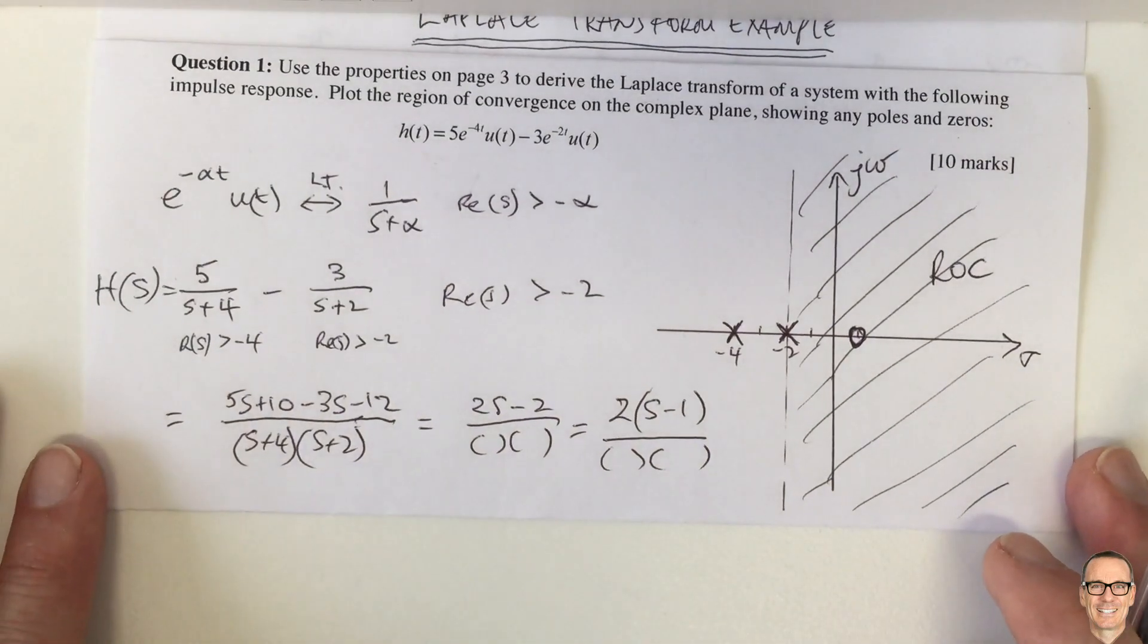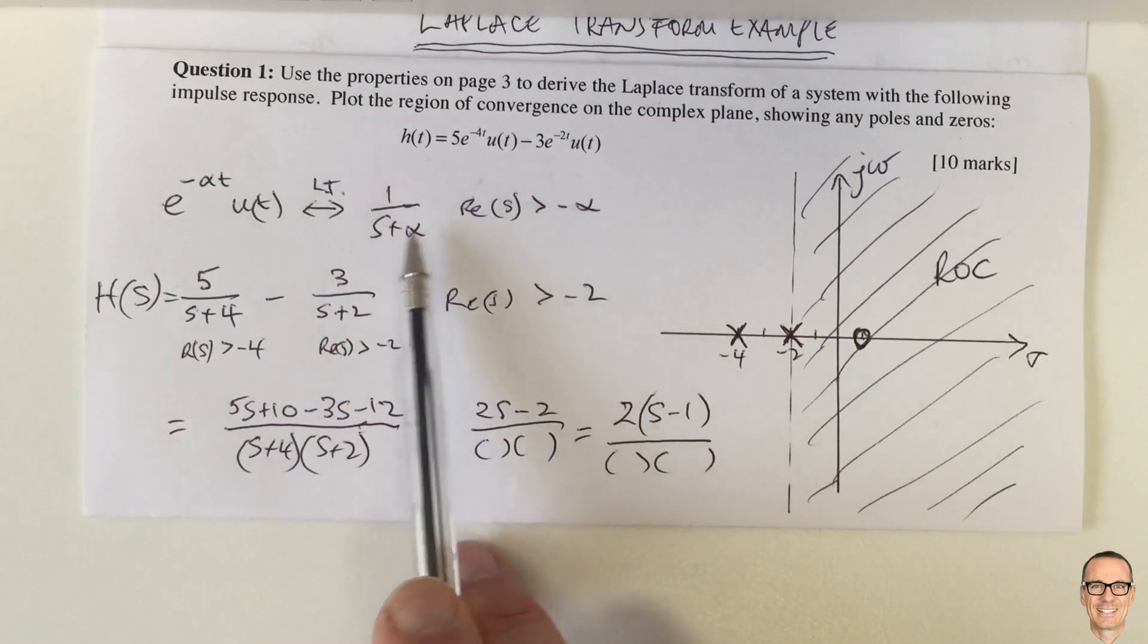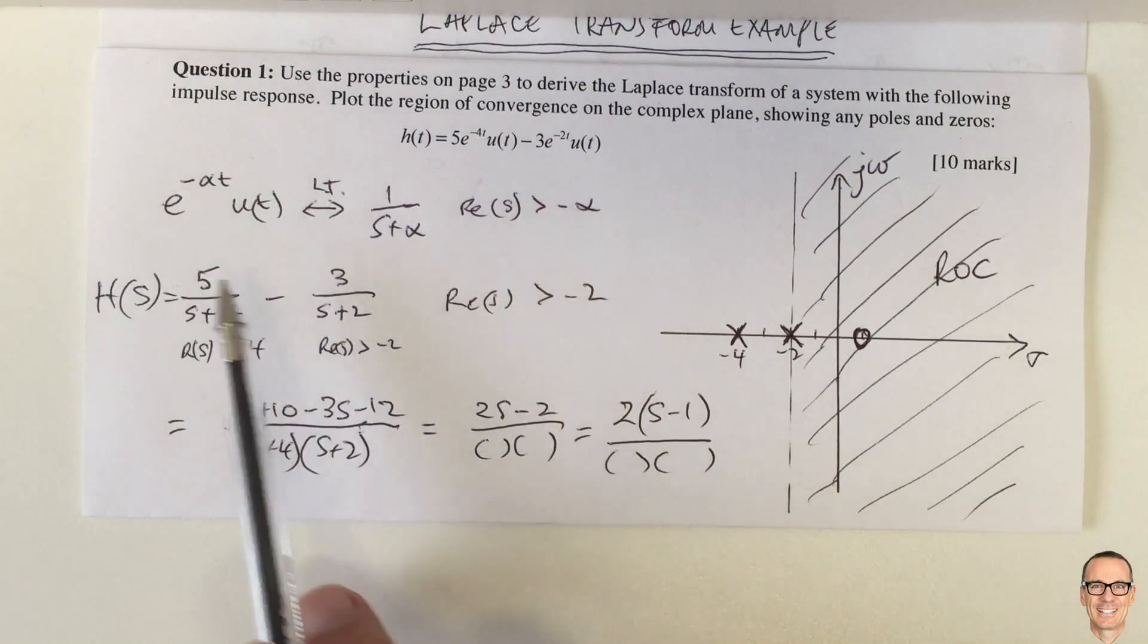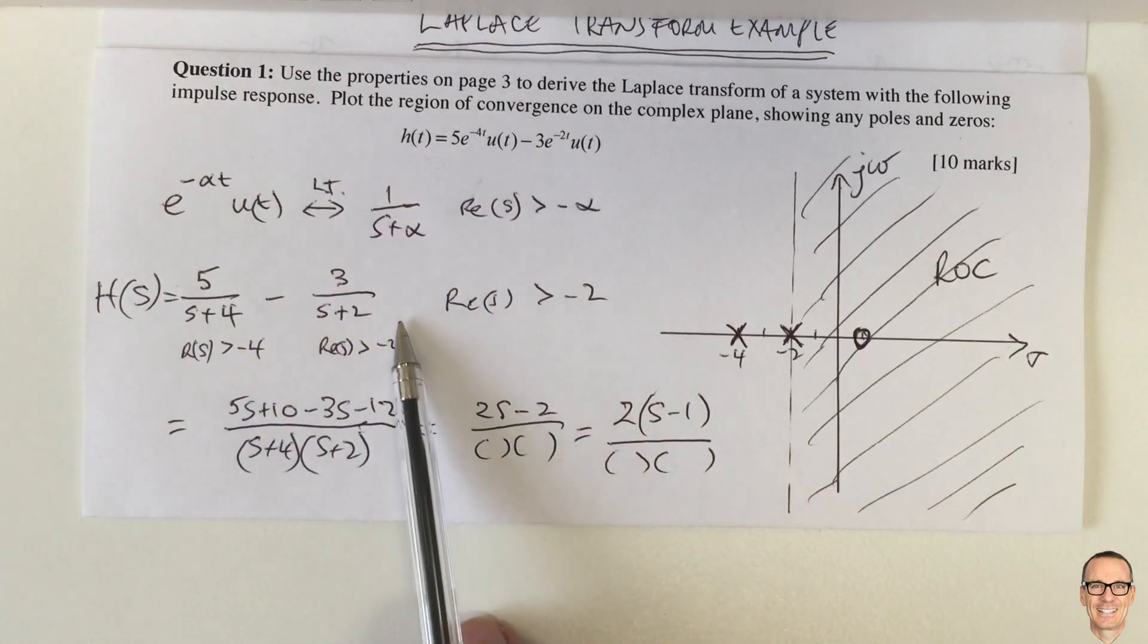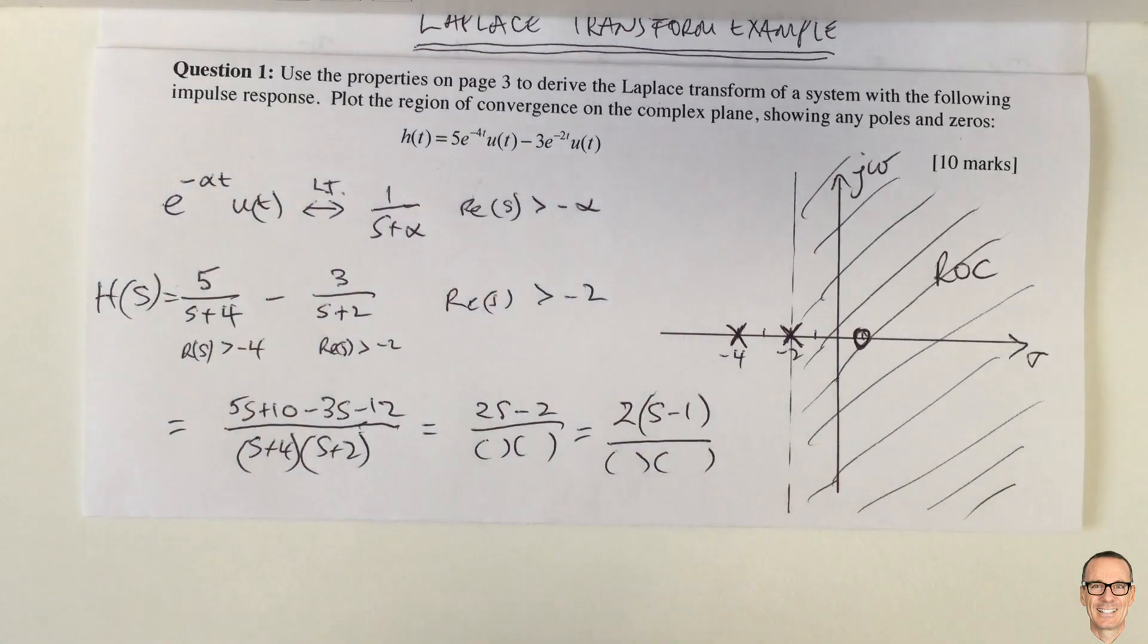So this is the answer. Using the Laplace transform tables, we can directly apply them to a linear system, and then we need to do some straightforward manipulation to find where the poles and zeros are.